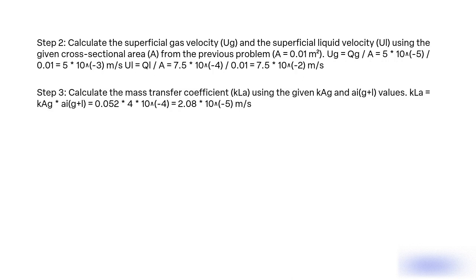Step 3: Calculate the mass transfer coefficient KL using the given KA and A_L values. KL = KA × A_L = 0.52 × 4 × 10⁻⁴ = 2.08 × 10⁻⁴, giving KL equal to 2.8 × 10⁻⁵ m/s.